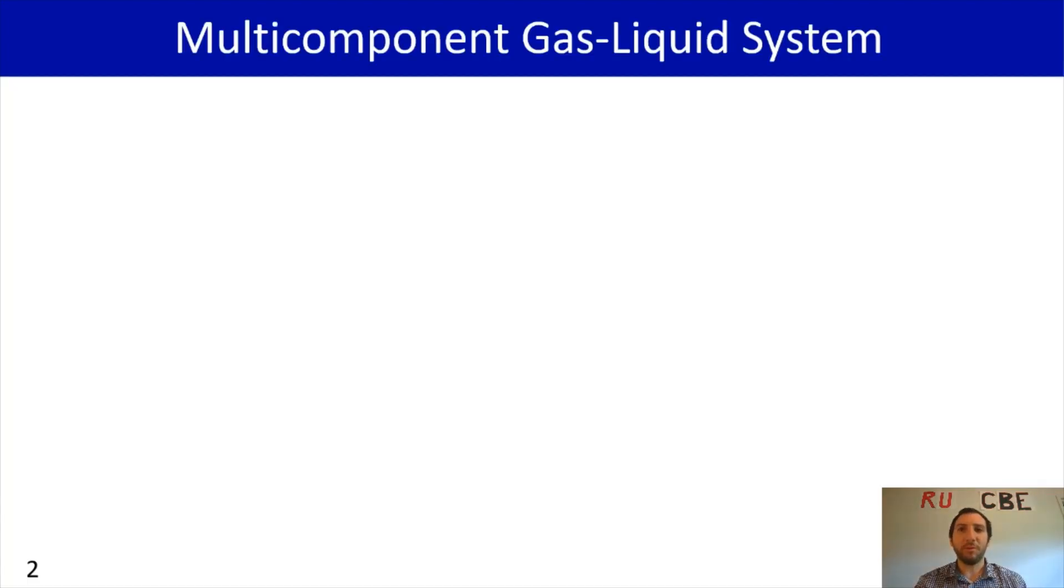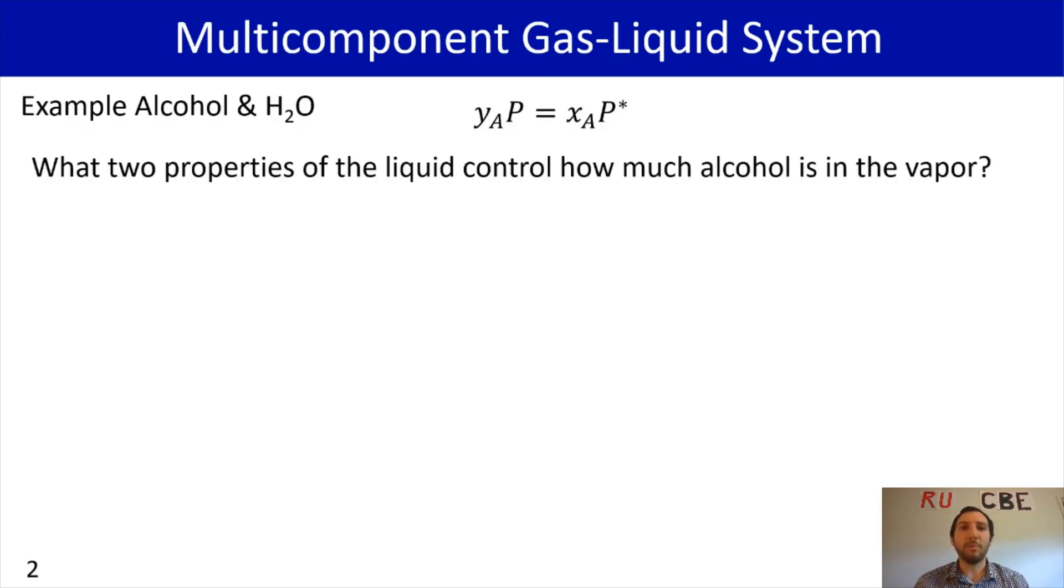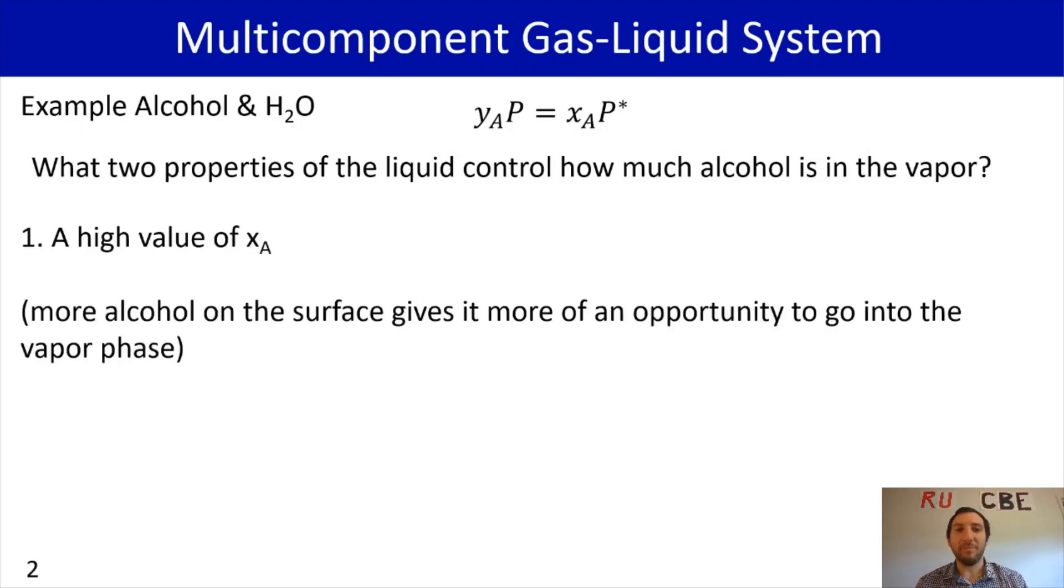Now, if you have a multi-component system with gases and liquids, we can use an example of alcohol and water. And as we've discussed previously, if you combine Raoult's law and Dalton's law, you get this expression: y_A P = x_A P*, the mole fraction in the vapor times the total pressure equals the mole fraction of component A in the liquid phase times the vapor pressure or saturation pressure of that component. One of the questions you may have when dealing with a multi-component system is what two properties of the liquid control how much alcohol is in the vapor. The first part that affects how much alcohol you have in the vapor is having a high amount of alcohol in the liquid. So the more alcohol that's present on the surface, the more opportunities it has to go into the vapor phase.